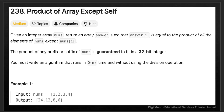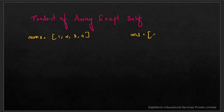Product of Array Except Self. The input array nums is given as [1, 2, 3, 4]. The answer array is given as [24, 12, 8, 6].